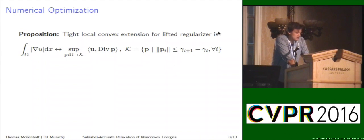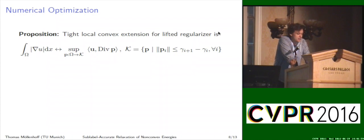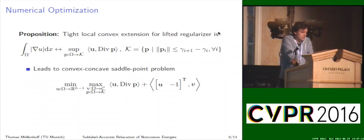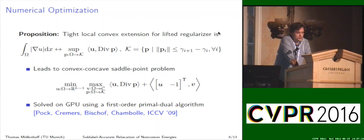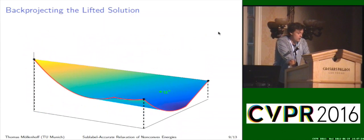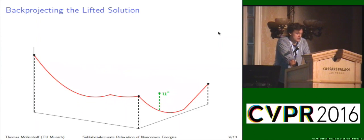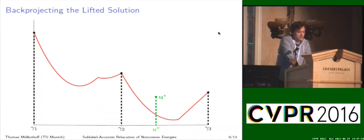This was the main construction for the data term. For the regularizer, the total variation can also be lifted to this higher dimensional space, and we show in our paper that for the sub-label accurate formulation, we can use the same regularizer as from Pock 2008. Combining the data term and the regularizer, we end up with a convex-concave saddle-point problem, which can be solved efficiently on a GPU using a first-order primal-dual algorithm. Once we have obtained the solution to the higher dimensional lifted problem, we simply back-project it to the lower dimensional space to obtain our solution.